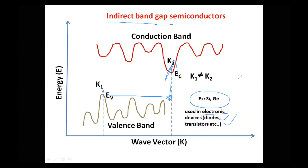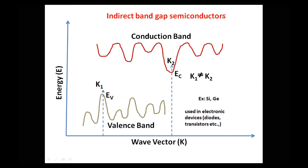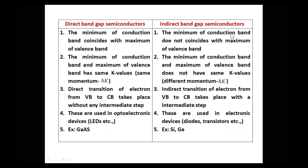Now we have understood what direct bandgap semiconductors and indirect bandgap semiconductors are. Let us put the differences between these two types in a tabular form. The first point is the definition: in direct bandgap semiconductors, the minimum of the conduction band coincides with the maximum of the valence band, whereas in indirect bandgap semiconductors it does not coincide.